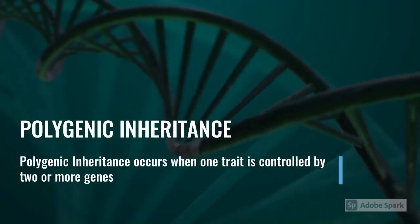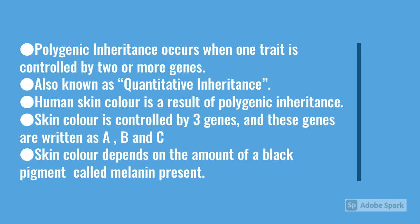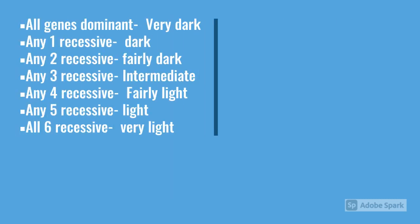Polygenic inheritance, also known as quantitative inheritance, occurs when one trait is controlled by two or more genes. Human skin color is a result of polygenic inheritance. Skin color is controlled by three genes written as A, B, and C, and depends on the amount of a black pigment called melanin present. Each dominant gene is responsible for the formation of a fixed amount of melanin pigment. More capital letters shift skin color toward the darker range, while small letters shift it toward the lighter range.